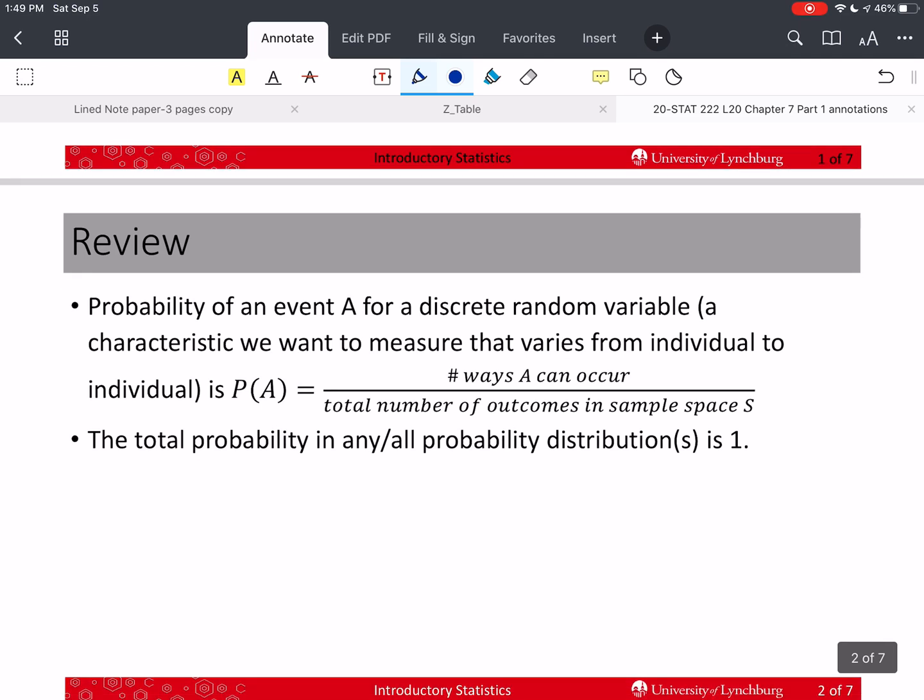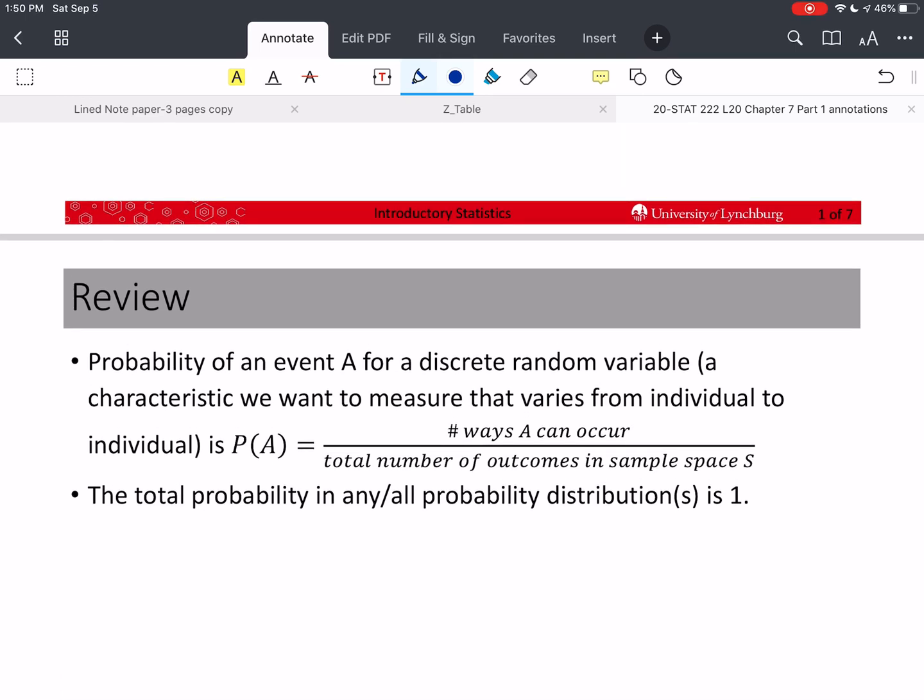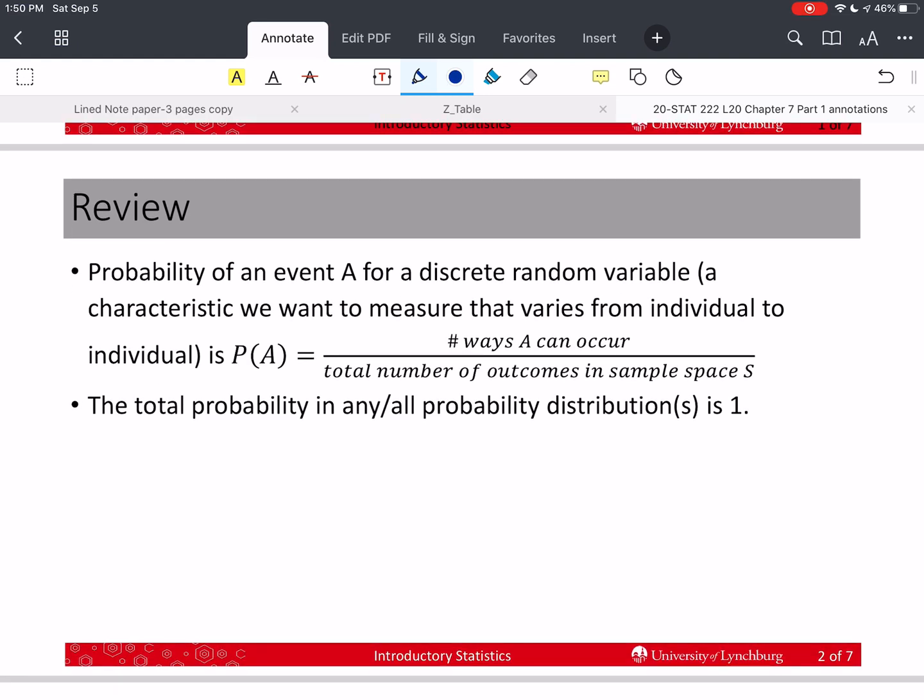So last time we talked about the probability of an event, and we described the probability for a discrete distribution, and that involves a discrete random variable. So what is a random variable? A random variable is something that varies from person to person and that we're measuring.